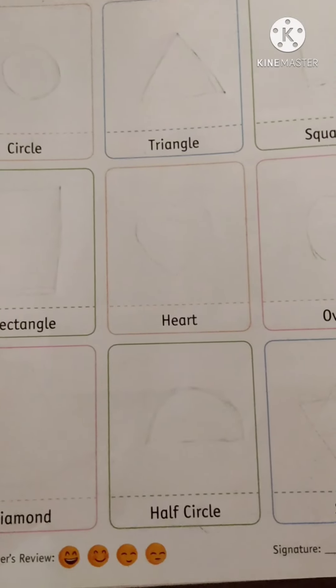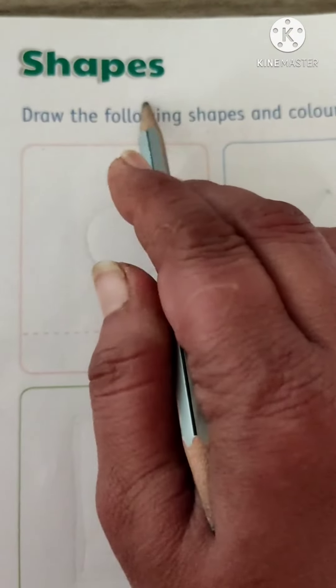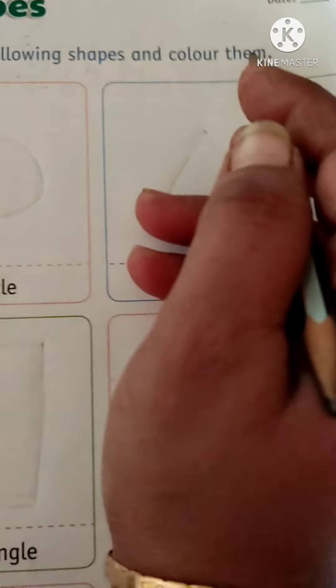In the same book, page number 28, write same date, 4th February 2021. Our topic is shapes. Draw the following shapes and color them.